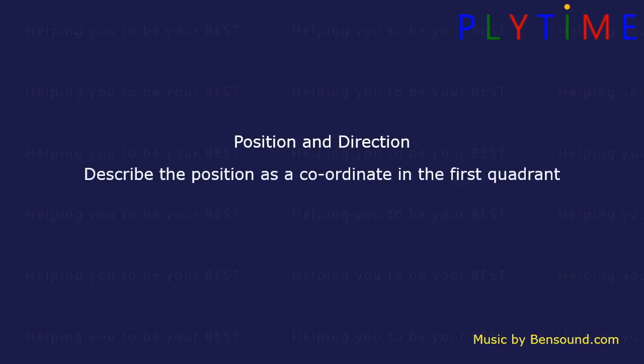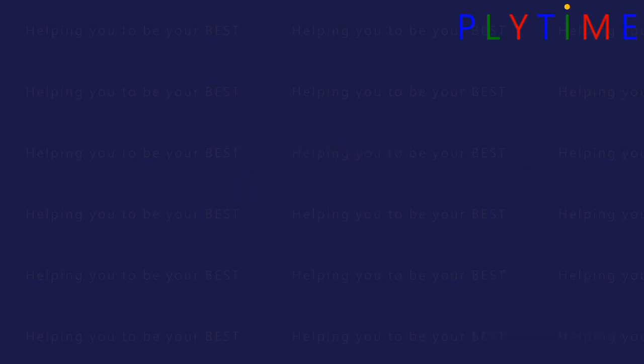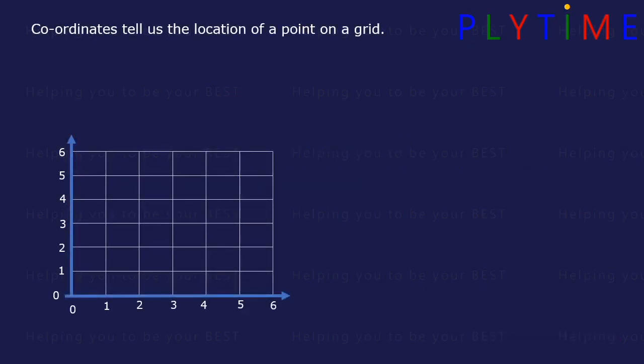Position and direction. Describe the position as a coordinate in the first quadrant. Coordinates tell us the location of a point on a grid.